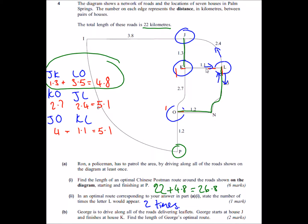And then the last part says George is to drive along all the roads delivering leaflets. George starts at house J and finishes at house K, find the length of George's optimal route. Well, if you're starting and finishing at J and K, J and K are allowed to be odd.